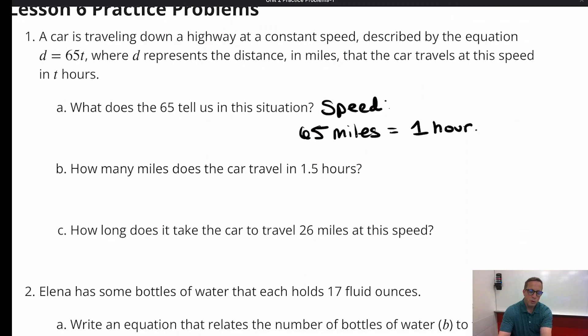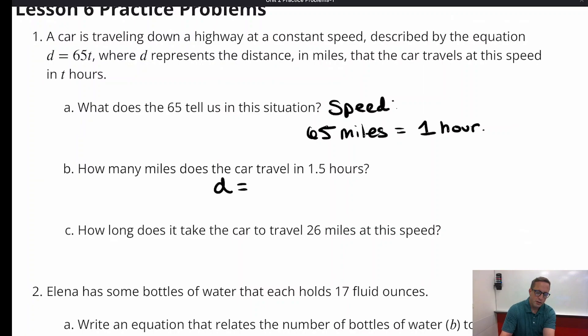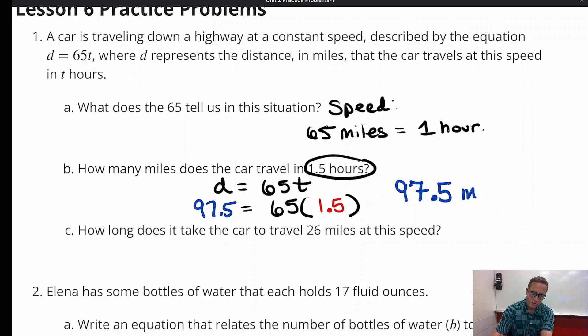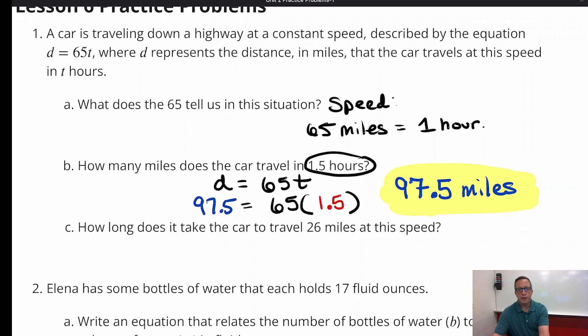How many miles does the car travel in 1.5 hours? Well, I'm just going to use that equation. D equals 65T. So all we have to do is 1.5 hours is the time, so we're going to do 65 times 1.5. And then when you do that, what do you get? You get 97.5. So there it is. That's 97.5 miles.